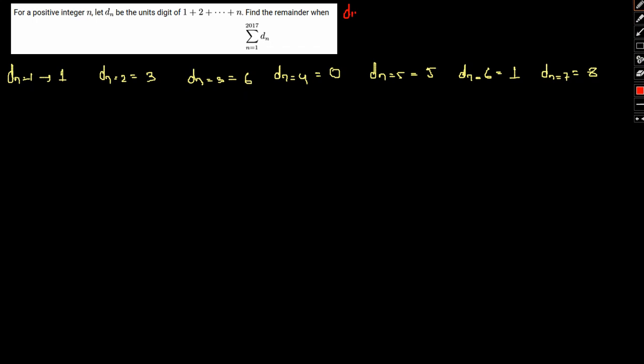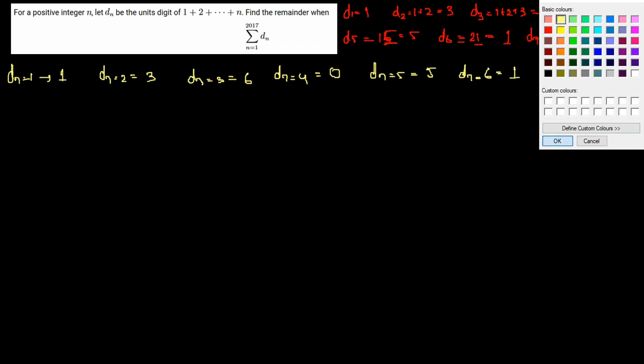Let me tell you how we are arriving at this conclusion. d of 1 equal to 1. d of 2 equal to 1 plus 2 that is 3. d of 3 equal to 1 plus 2 plus 3 equal to 6. d of 4 equal to 1 plus 2 plus 3 plus 4 that is 10. So we need only unit digit equal to 0. d of 5, since it is 10 plus 5, unit digit comes out to be 5. d of 6, we know is 15 plus 6, 21, so only the unit digit is 1. d of 7, we have 21 plus 7, 28, only the unit digit equal to 8. This is the approach we are taking towards figuring out the d of n.